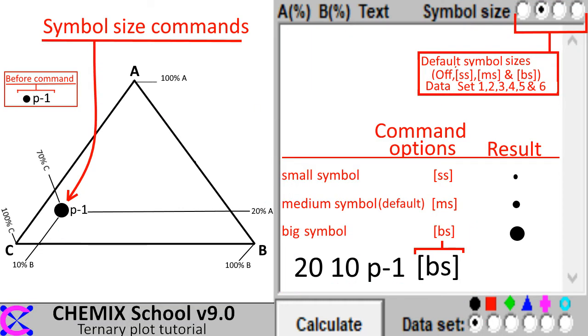To change the size of a symbol, enter a two letter symbol size command enclosed in square brackets. The options are a small symbol, a medium symbol, and a big symbol. It should be noted that all commands always must be located on the right side.